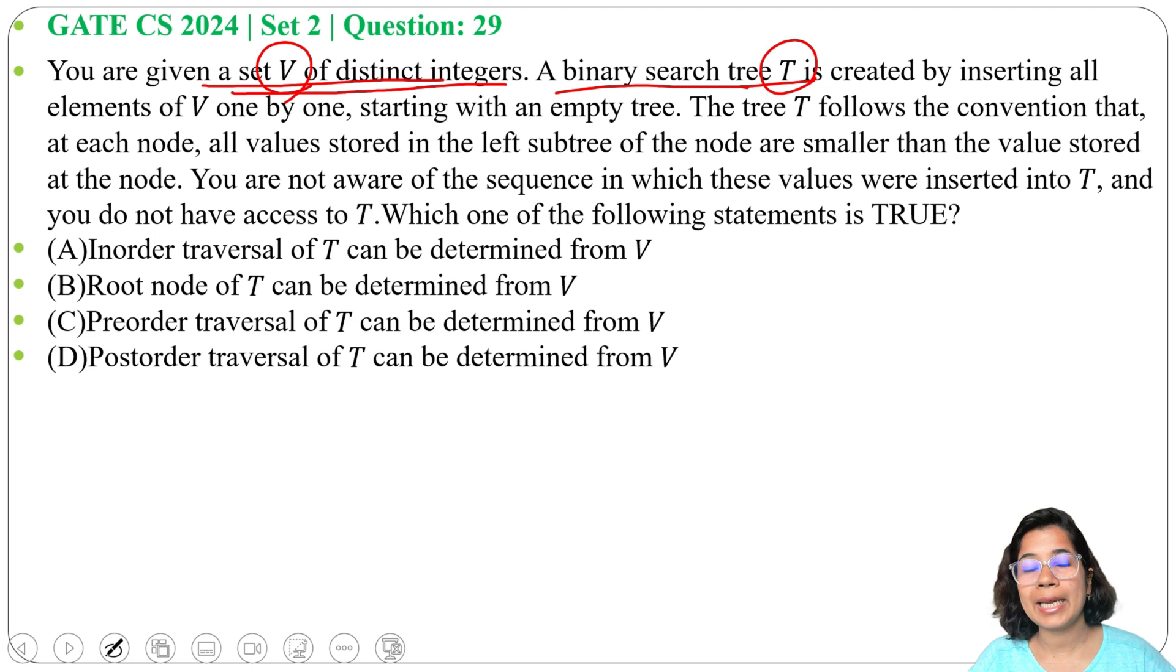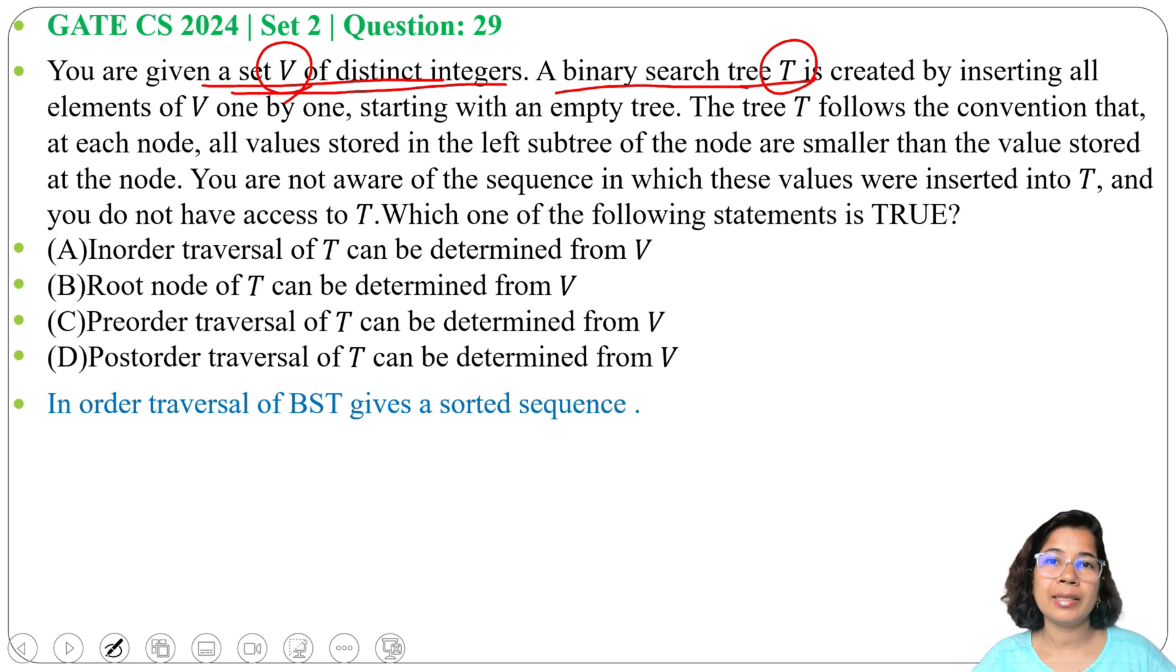Now option A: inorder traversal of T can be determined from V. Yes, this is true. Inorder traversal of BST gives a sorted sequence. If you sort that array then you will get the inorder of the BST.